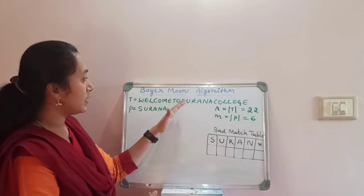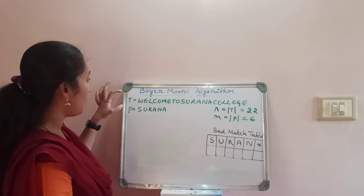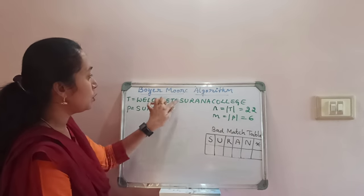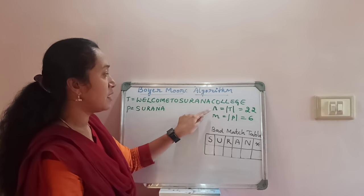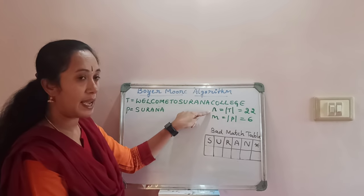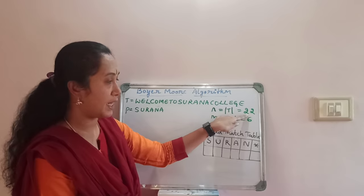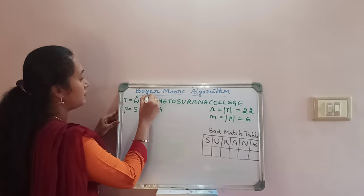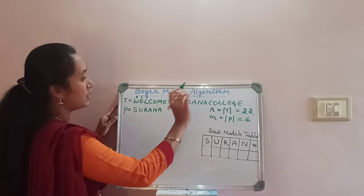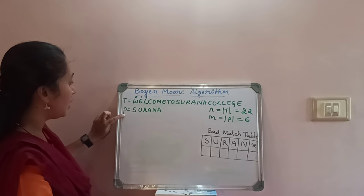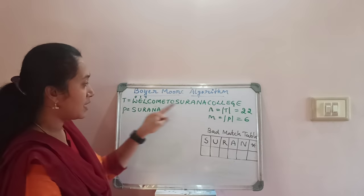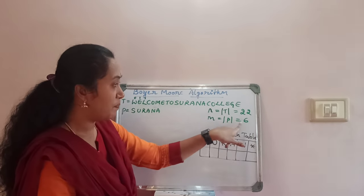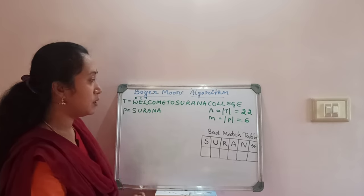Now let us go through an example. The given text is 'Welcome to Suruna College', where the length of the text is the n value, which is 22 characters. As we consider always in terms of arrays, it starts with 0, 1, 2, 3 till n value. Now the pattern, if you consider, the pattern length always we mention with this symbol where the pattern length is the value 6 here.